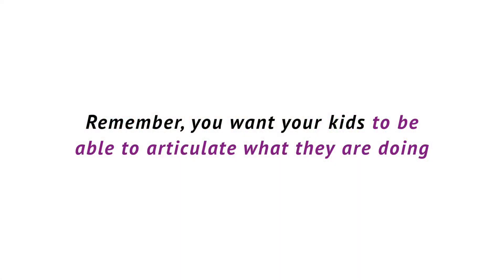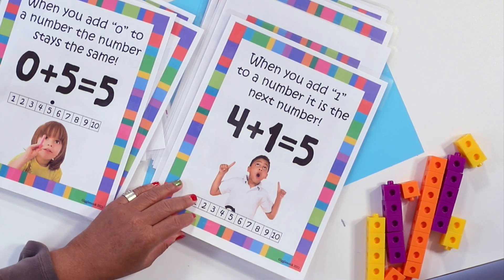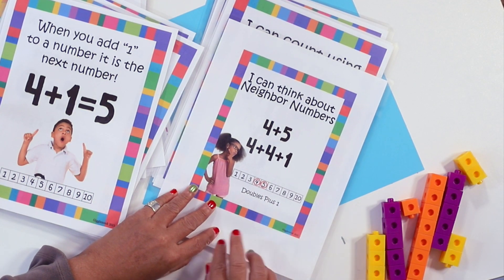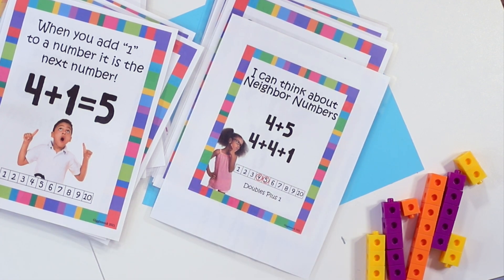The research says kids should be able to explain their strategies. Some kids will know how to get to the answer — they'll understand the concept — but they won't be able to articulate it. You want to work on that. You want kids to be able to articulate what they are doing. 'When you add one to a number, it's the next number' — you want kids to understand that idea so they're not counting up from one. You want them to know four plus one is five, five plus one is six. 'I can think about neighbor numbers' — if the numbers sit side by side, they're neighbor numbers. So four plus five is four plus four and then one more. Six plus seven is six plus six and then one more.